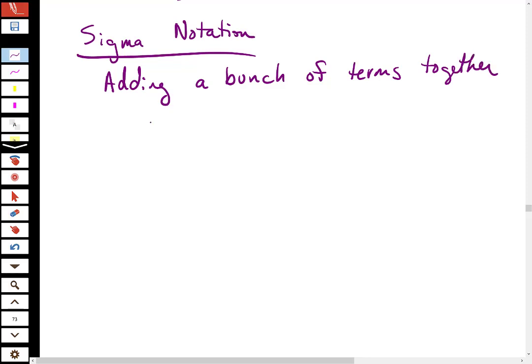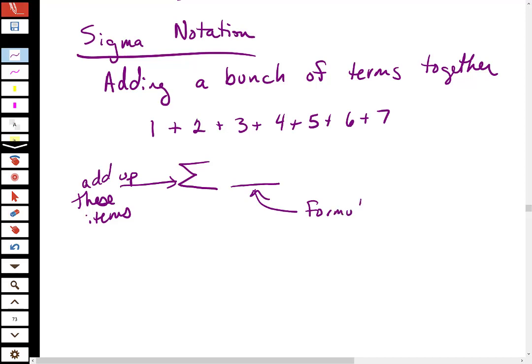So, let's say you have 1 plus 2 plus 3 plus 4 plus, right? I'm just adding up integers. There's a pattern to this that you can see, and so we'll use Sigma Notation to write this out. The Sigma Notation for this uses the Greek letter Sigma. This really means add up these things. And then I have to write a formula. In here, this is a formula for each term.